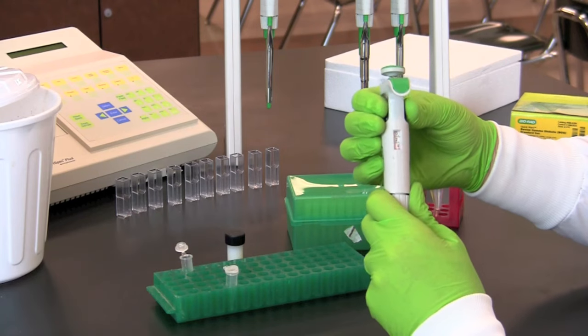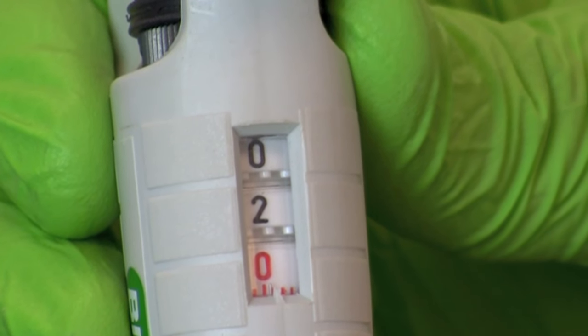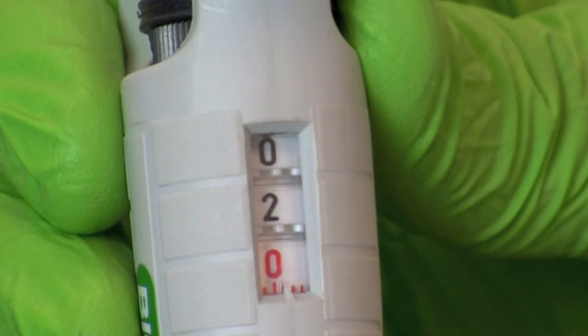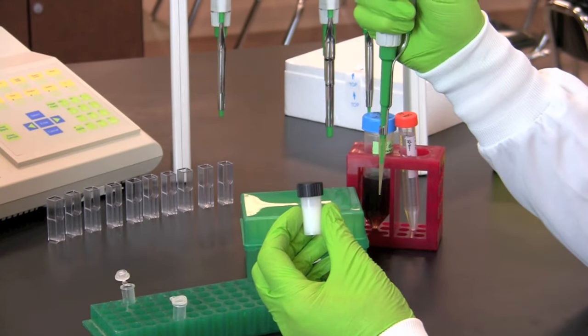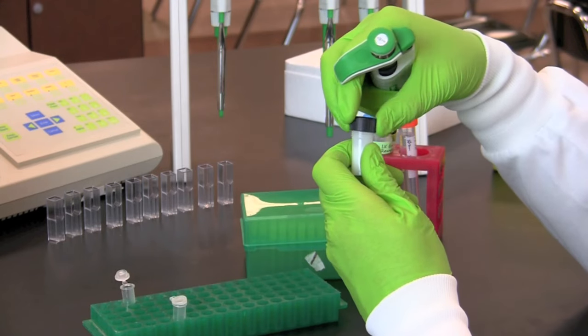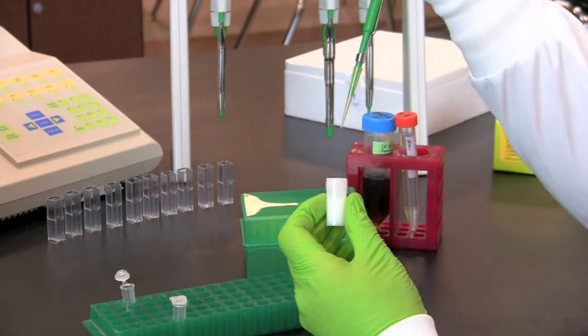Switch to a 2 to 20 microliter micropipet and set the pipet to 2 microliters. Pipet 2 microliters of milk sample into the microtube labeled sample A.